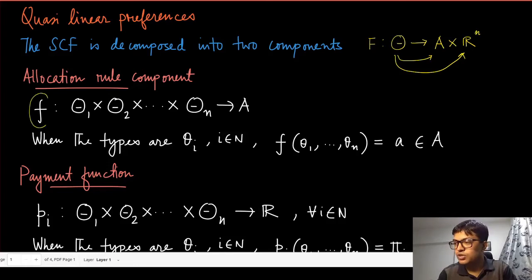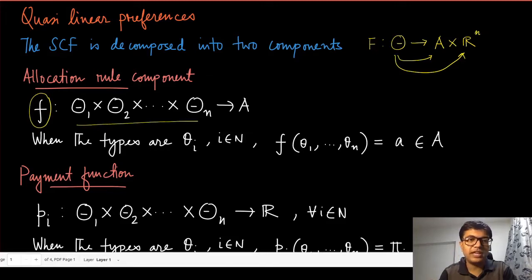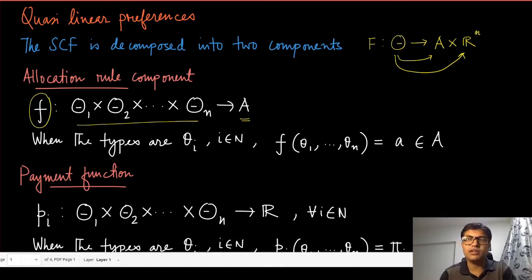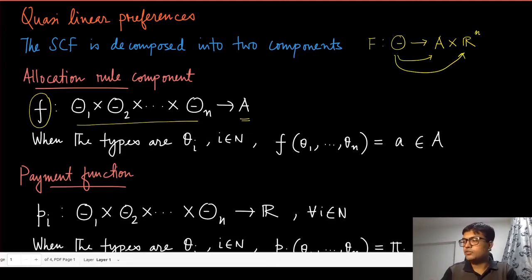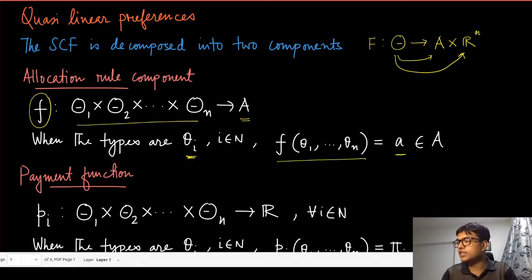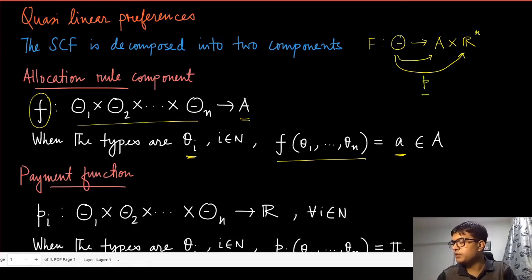The allocation rule is denoted by lower-case f. If each player reports their type, it takes an allocation decision from the set A. For example, if each player says how much they value a specific object, the indivisible item allocation gives the item to one of the agents. Each type is denoted by theta_i, so f(theta_1, ..., theta_n) is an alternative living in set A.